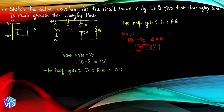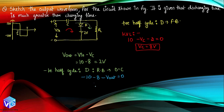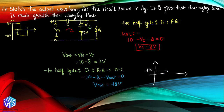Applying KVL in the larger loop: −10 − 8 − V_out = 0, so V_out equals −18 volt. The output waveform therefore shows +2 volt for the positive half cycle (0 to T/2) and −18 volt for the negative half cycle (T/2 to T). This is the complete voltage-time waveform.